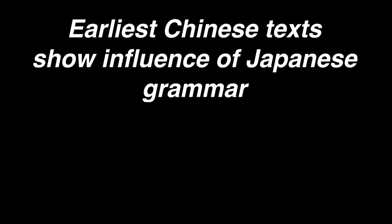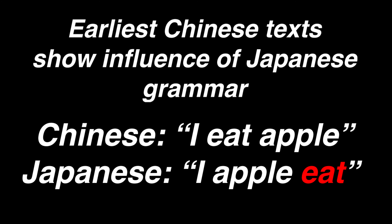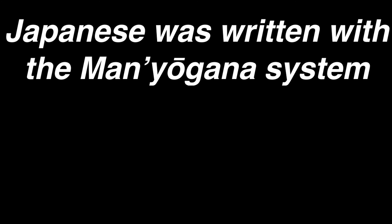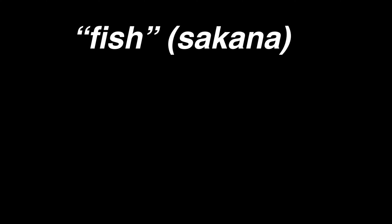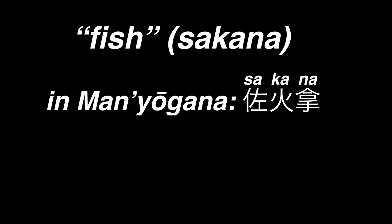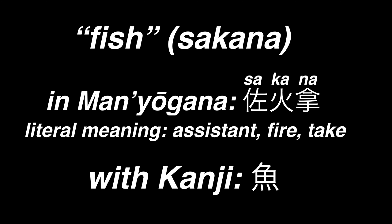The earliest Chinese texts show influence in Japanese grammar, like putting the verb after the object, unlike putting the verb before it in Chinese. Old Japanese was also written using the Manyogana system, in which Chinese characters were used for their phonetic value rather than their actual meanings. In other words, the word sakana, meaning fish, would be written with the characters sa, ka, and na, even though it literally means assistant, fire, and take.